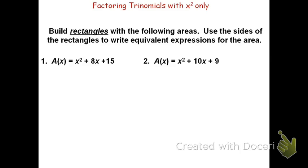To do this, we'll start with an area model. The area model of x squared plus 8x plus 15 would have one large x squared tile with x by x dimensions. It would have 8 rectangles, each 1 by x in dimension, and 15 of the little 1 squares, each 1 by 1 in dimensions. We need to find a way to arrange these tiles using the 8x's that provide a space for 15 of the 1's tiles.